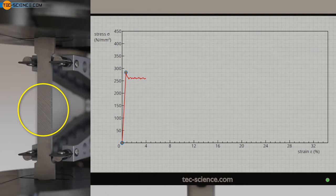These stretcher strain marks on the surface are also called Lüter bands, which often run at an angle of about 45 degrees to the tensile axis, since at this angle the shear stresses in the slip planes become maximum.